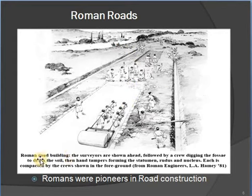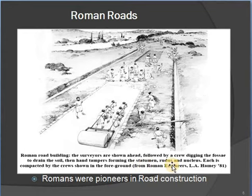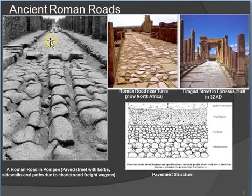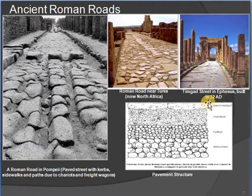Looking at Roman roads, the image shows Roman road building: surveyors are shown ahead, followed by a crew digging the fosse to drain the soil, then hand tampers forming the subgrade. Roads and nucleus, each compacted by crews. Romans were pioneers in road construction. Ancient Roman roads include a Roman road near Tunis, north of the cities, and timber-state built in 32 AD, and a Roman road in Pompeii.